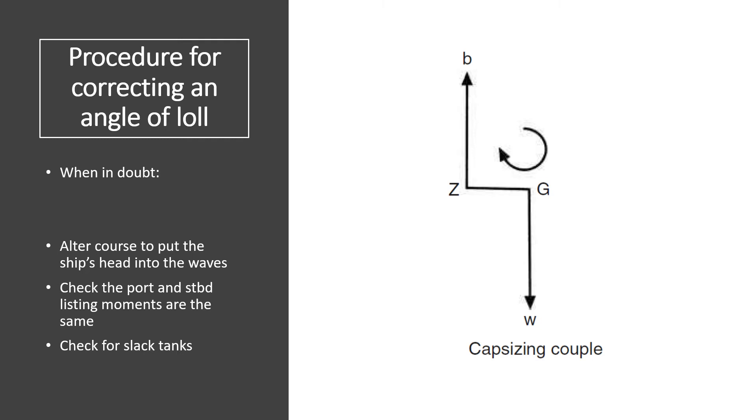If the ship is in an angle of loll situation, it is essential that it stays lolled to the same side, because wave action may cause the ship to roll through the vertical to roll on the other side, and that becomes dangerous. Once the ship heels from the vertical of its own accord, the momentum in rolling over to the other side may be sufficient to capsize the ship. In any event, the ship will initially heel beyond the angle of loll before settling at the angle of loll, and cargo shift may also result which may worsen the situation further.